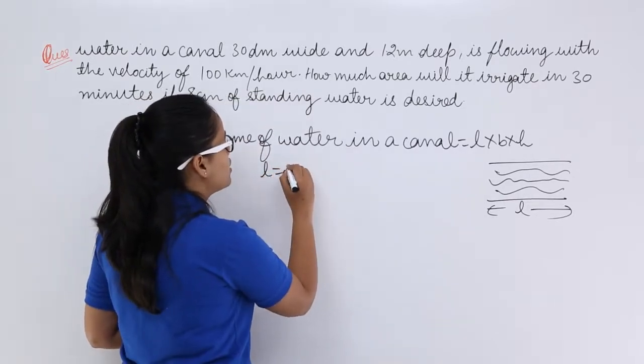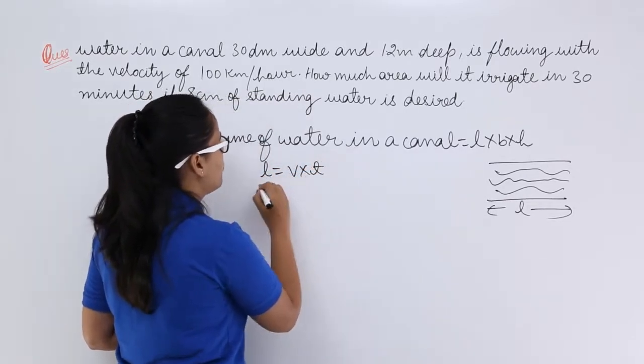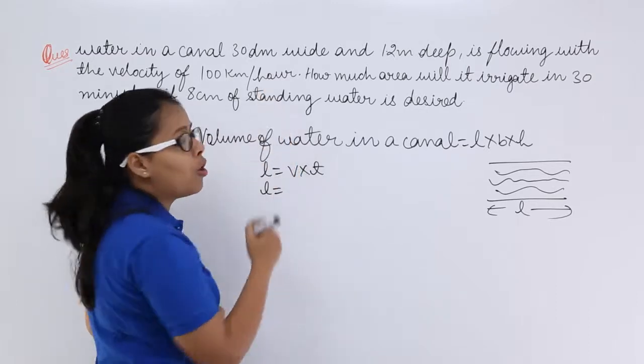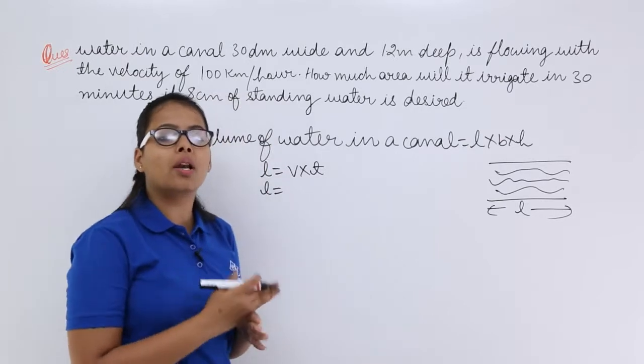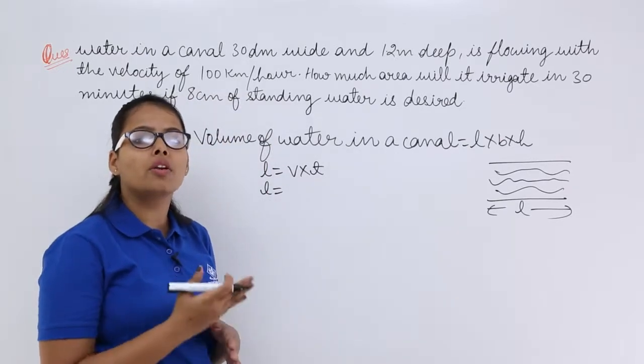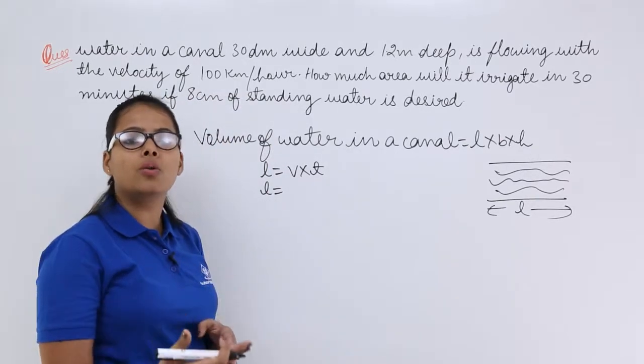Now let's calculate this length which will be v into t. You know that this velocity is in km per hour and here time given is in minutes. So you will convert the time unit into hours and you will convert the km unit into meters.